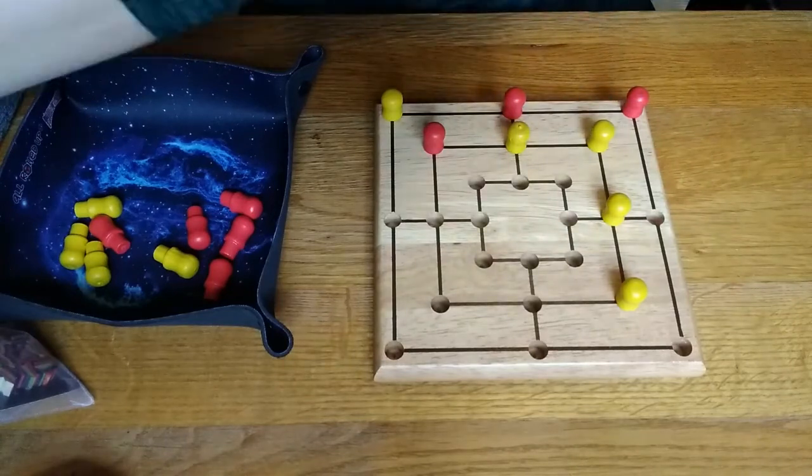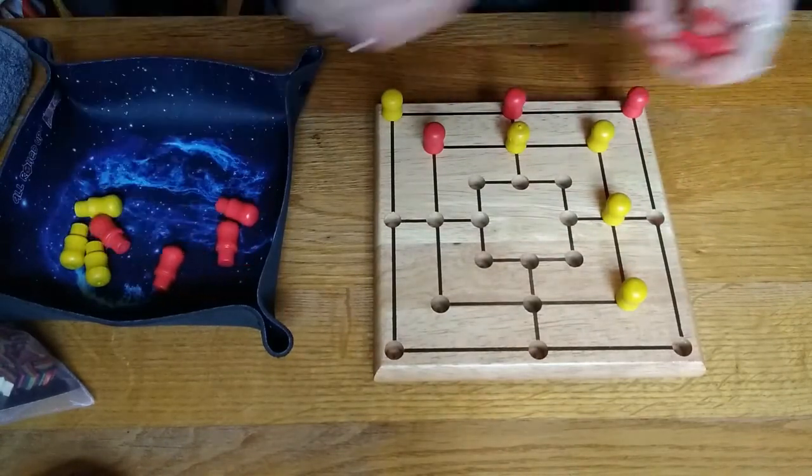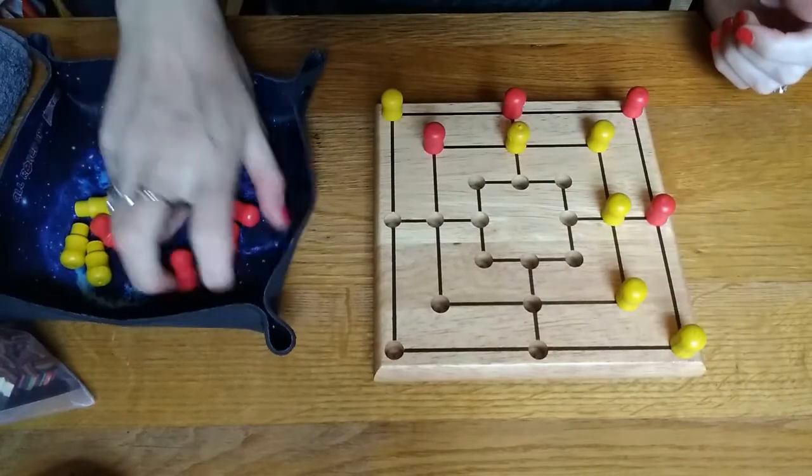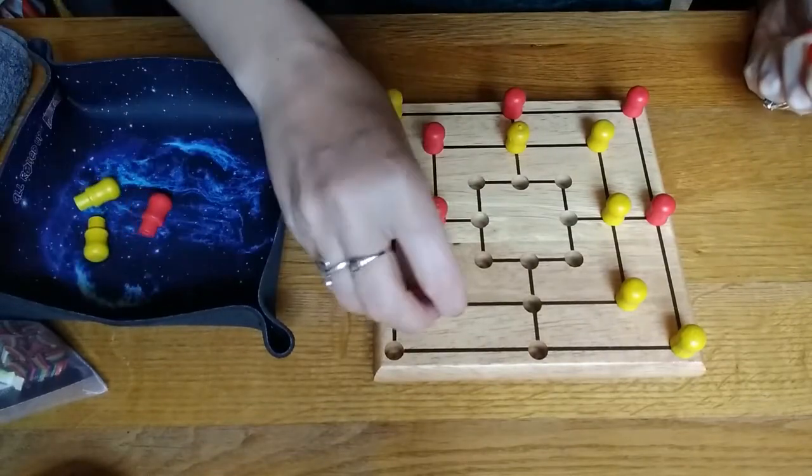So they're going to remove this piece. And that's completely removed from the game, you don't get that back. So it's red's turn, red goes here, yellow is going to block them. And you carry on setting up like so.